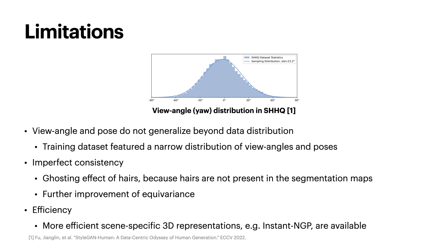Despite the promising results of our method, we acknowledge some limitations that need to be addressed in future work. First, our method does not generalize well to view angles and poses outside the data distribution of the training dataset, which featured a narrow range of variations. Second, our method does not achieve perfect consistency between input and output images, especially for hairs, which are not captured by the segmentation maps. Moreover, we believe the equivariance of our network can be further improved by a close inspection from a signal processing perspective. Third, our method relies on a generic 3D representation, SIREN, which may not be the most efficient or suitable. Therefore, we plan to explore more scene-specific 3D representations, such as Instant NGP, that can enhance the performance and quality of our method.